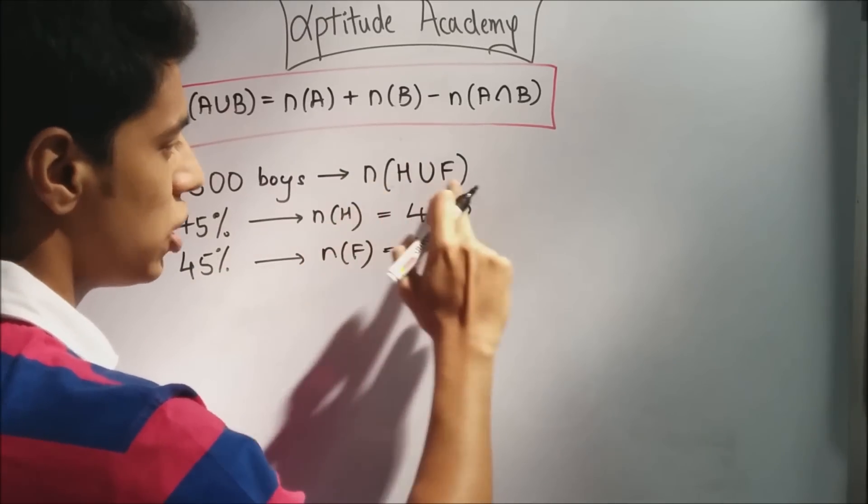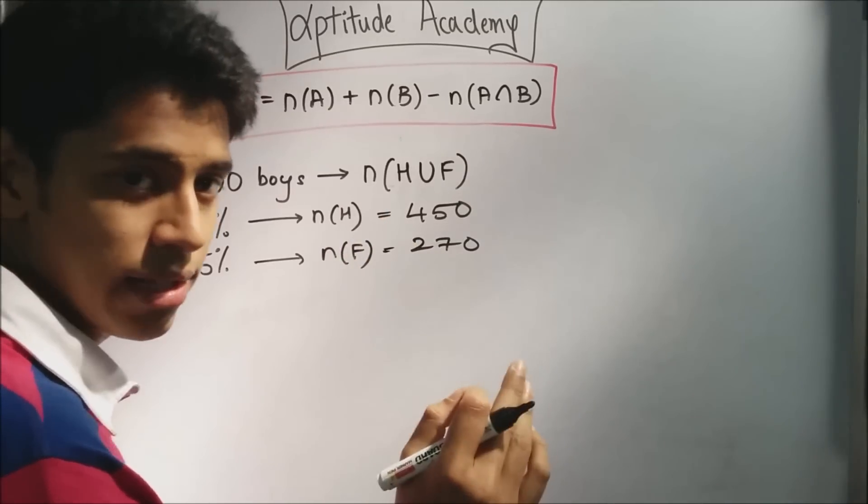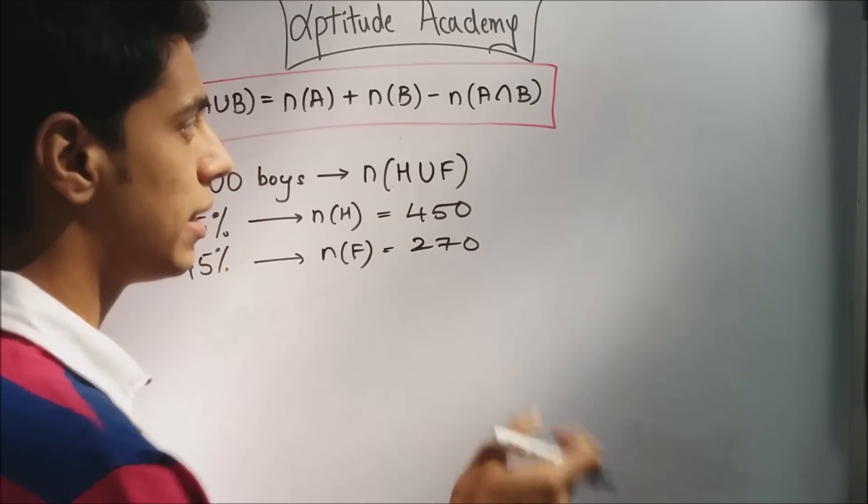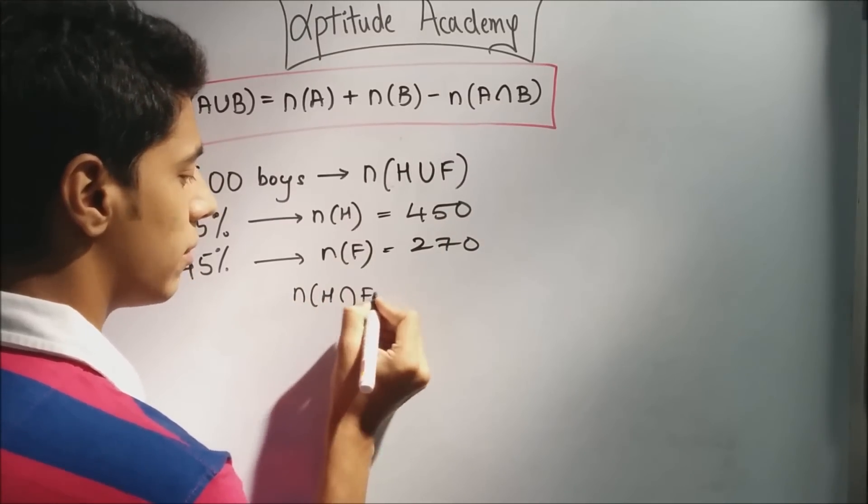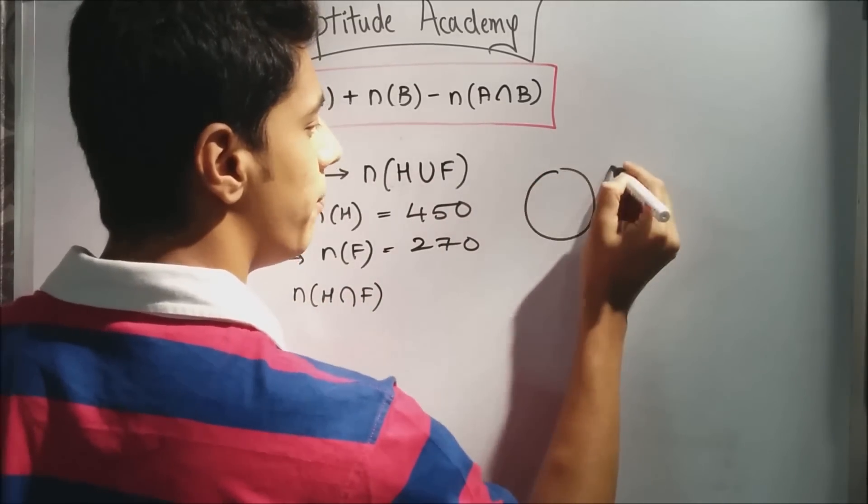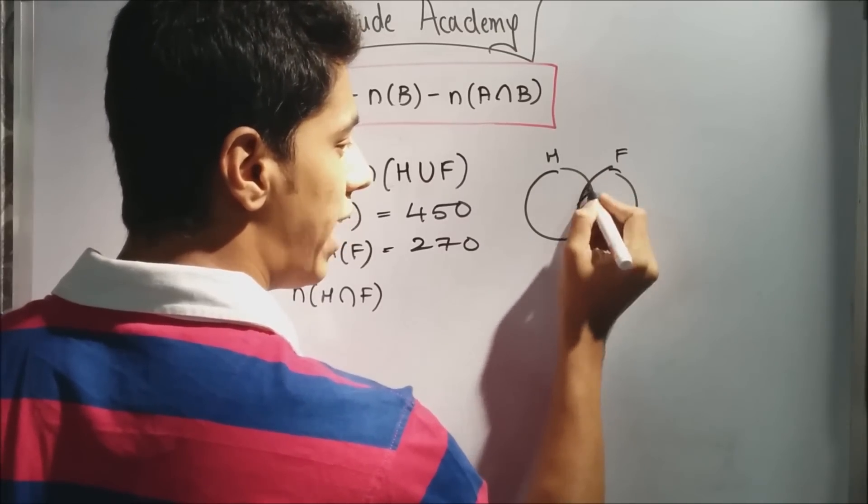Now, you have n(H union F), n(H), and n(F). Just substitute them. They've asked you to find how many players play both hockey and football. That is n(H intersection F). If you have your hockey and your football players here, they've asked you to find this. How many players play both the sports?